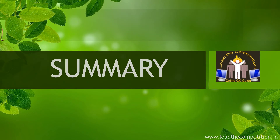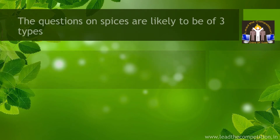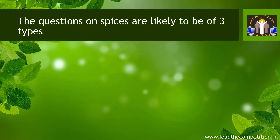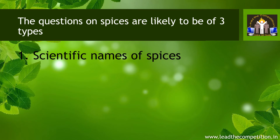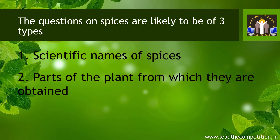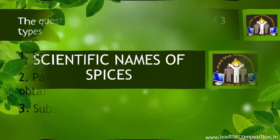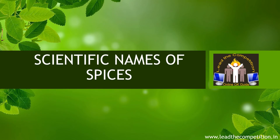Now, let us try to understand the topic a little better. The questions on spices are likely to be of three types: scientific name of spices, parts of the plant from which they are obtained, and substances found in some spices. Here are the scientific names of some common spices.